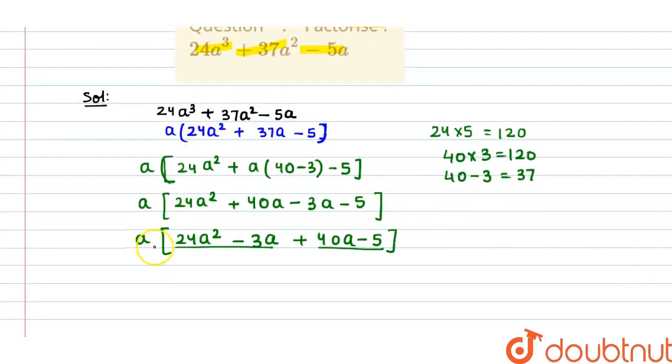So a outside the bracket, from this I am taking 3a as common. It means 8a - 1. Here I will take 5 as common, 8a - 1. We get common term 8a - 1.